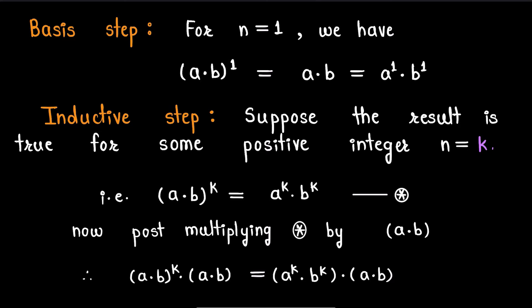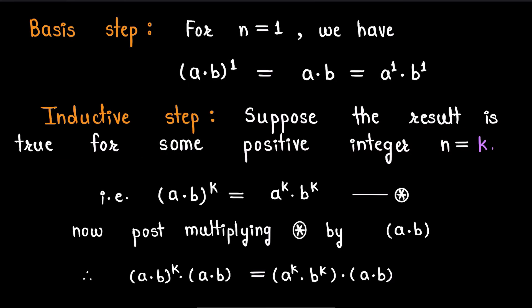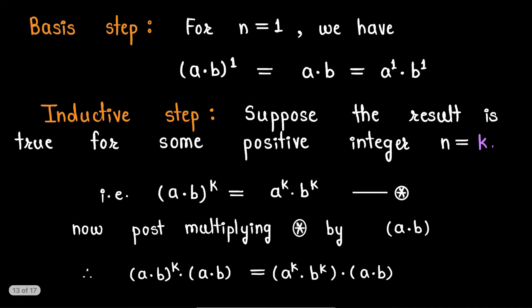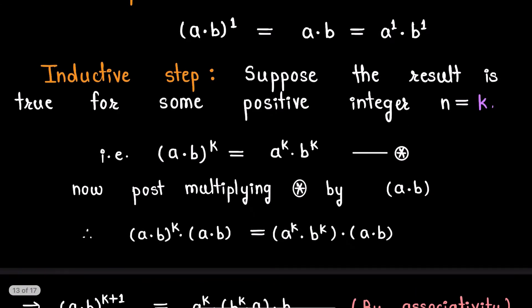For the inductive step, suppose the result is true for some positive integer n = k. That is, we assume (a·b)^k = a^k · b^k — call this expression star. We will show the result is true for n = k+1. Post-multiplying star by (a·b), we get (a·b)^k · (a·b) = a^k · b^k · a · b.